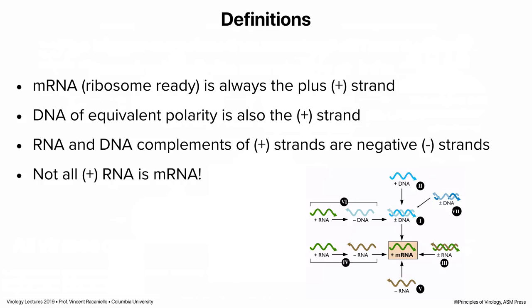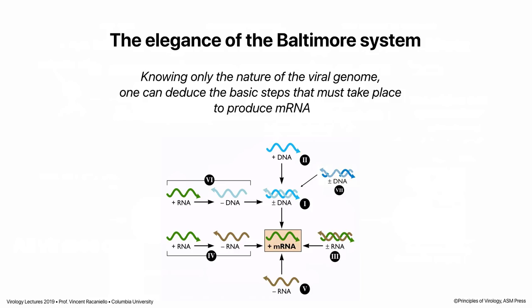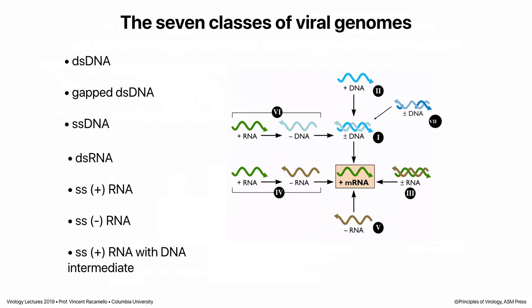There again is the Baltimore scheme. It's wonderful how you can use it to trace all of these genomes. All you need to know is the nature of the genome — one of those seven types. If I say double-stranded RNA, you should be able to tell me exactly how it gets to mRNA. You just need to know a few things about the nature of nucleic acid and what can or cannot be translated.